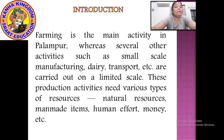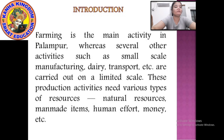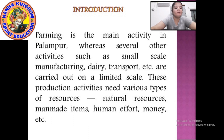Farming is the main activity in Palampur. There are non-farming activities also. Several other activities like small scale industries, dairy, and transport are carried out on a limited scale. These production activities need various types of resources — natural resources, man-made items and human effort, money, everything.